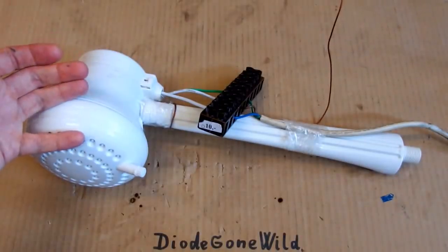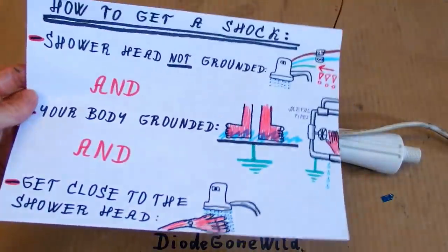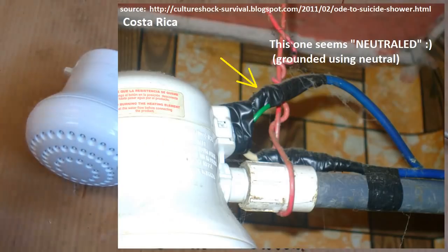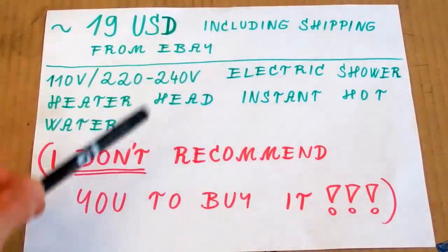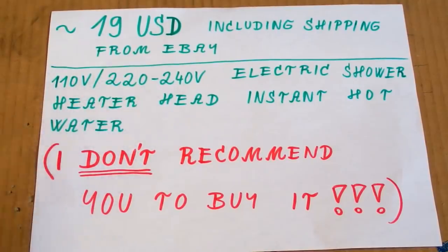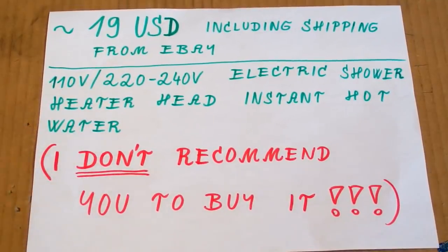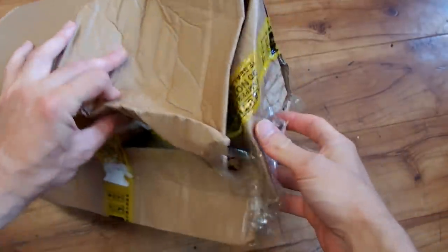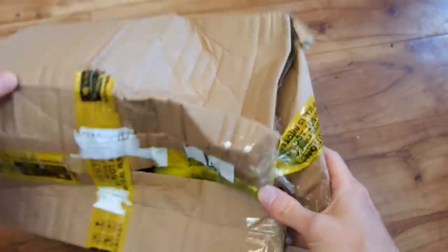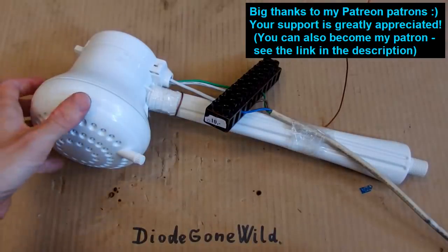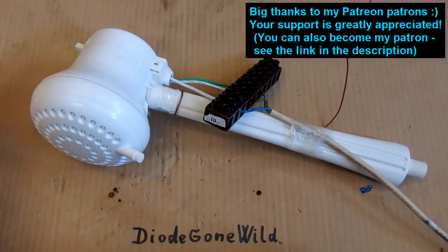So it's an amazing device. It works. But in some circumstances it may give you a shock. And it's definitely not up to a safety standard of rich countries like Europe, UK, US, Canada or Australia. It comes from eBay for about 19 dollars including shipping. Here you can see some keywords and of course I don't recommend you to buy it. And it arrived in quite a nice box. But surprisingly it's not damaged. So this is Diagon Wild and see you in my next videos. And thanks to all of my patrons on Patreon. I really appreciate your support.